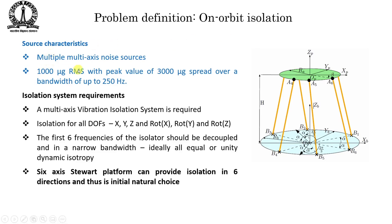Most of the time we need an isolation device between the spacecraft body and the sensor. We have multiple sources of noise — multi-axis sources — so this noise could be in the X, Y, Z or even rotation directions. Typically it is of the order of 1000 micro-g RMS with a peak value of 3000 micro-g, spread over a bandwidth up to 250 Hz. We need a multi-axis vibration isolation system that isolates all degrees of freedom.